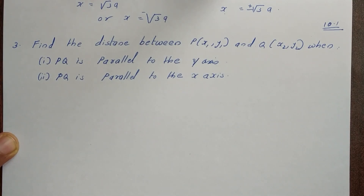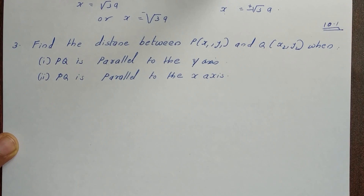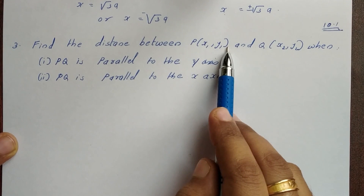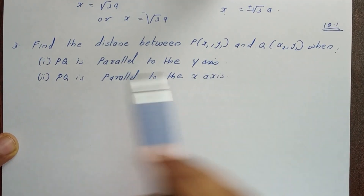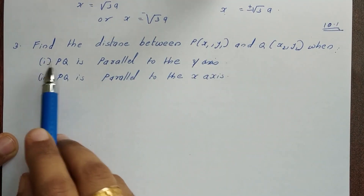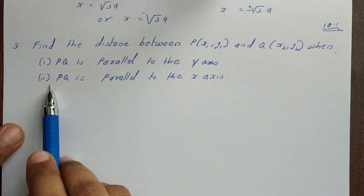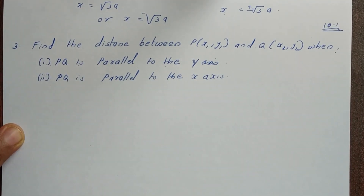Hi students, this is the 10.1 problem. First two questions: find the distance between P(x1,y1) and Q(x2,y2) when, first option, PQ is parallel to the y-axis, and second, PQ is parallel to the x-axis.